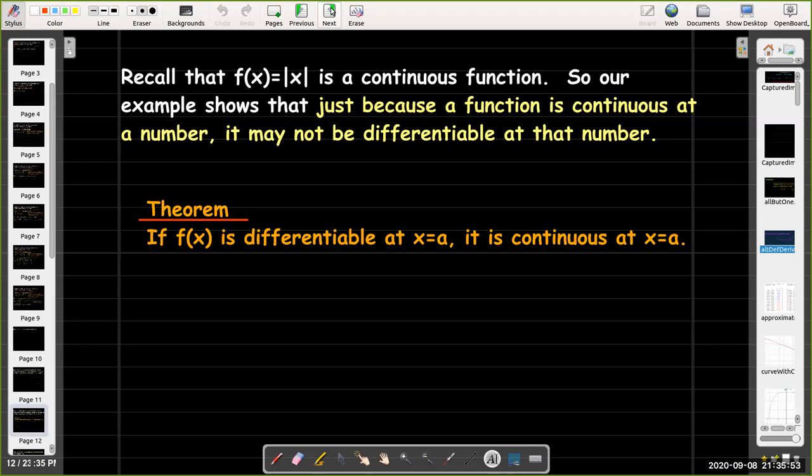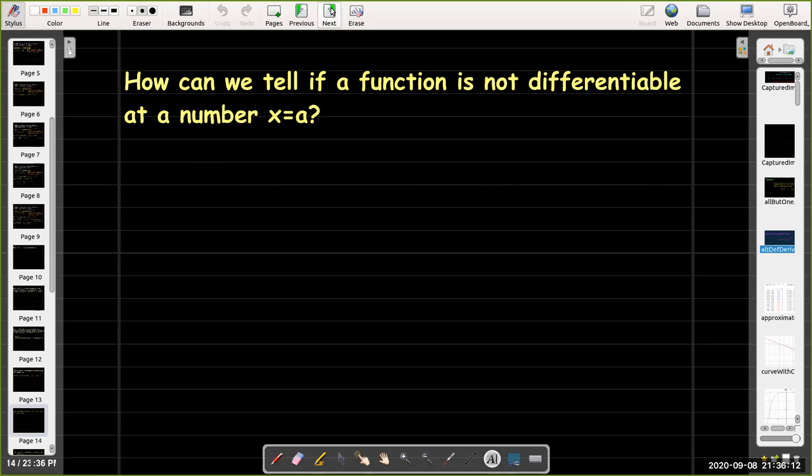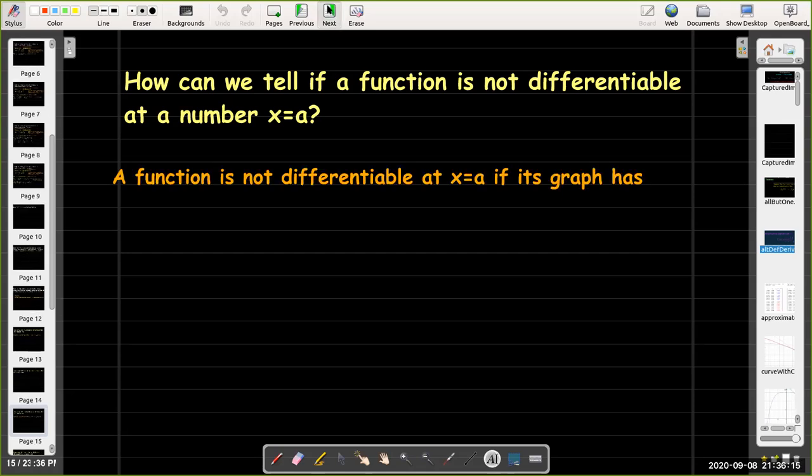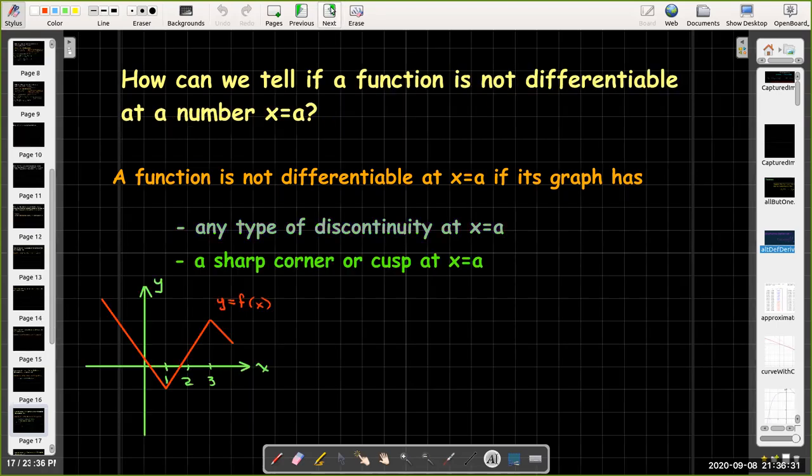However, if a function is differentiable at a number, it must be continuous there. So how can we tell if a function is not differentiable at a number x = a? Well, we can look at its graph. If its graph has any type of discontinuity when x equals a. So if it has a jump, an asymptote, a hole in it, it's not differentiable. If it has a sharp corner or a cusp at x equals a.